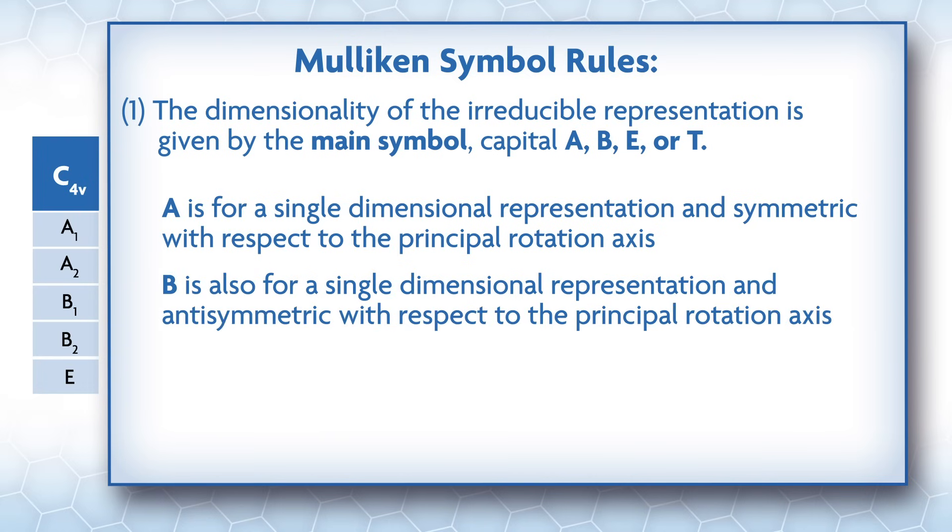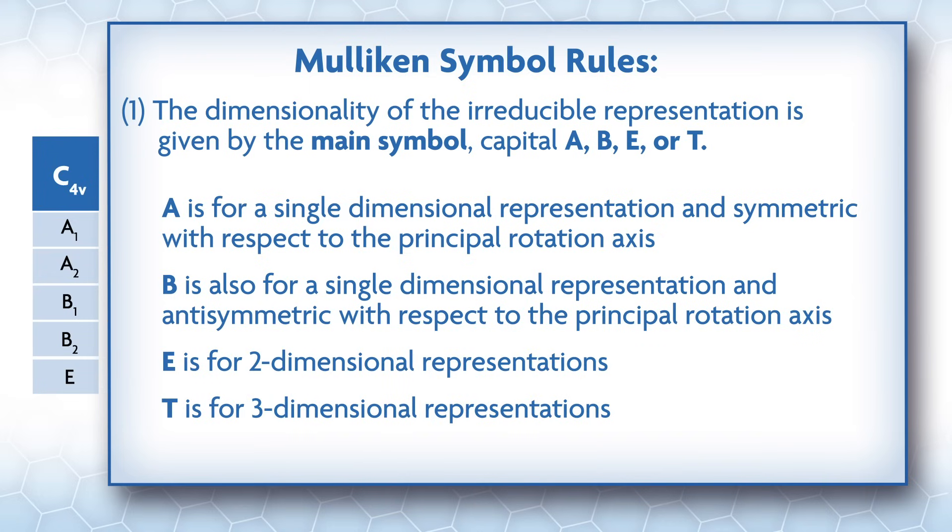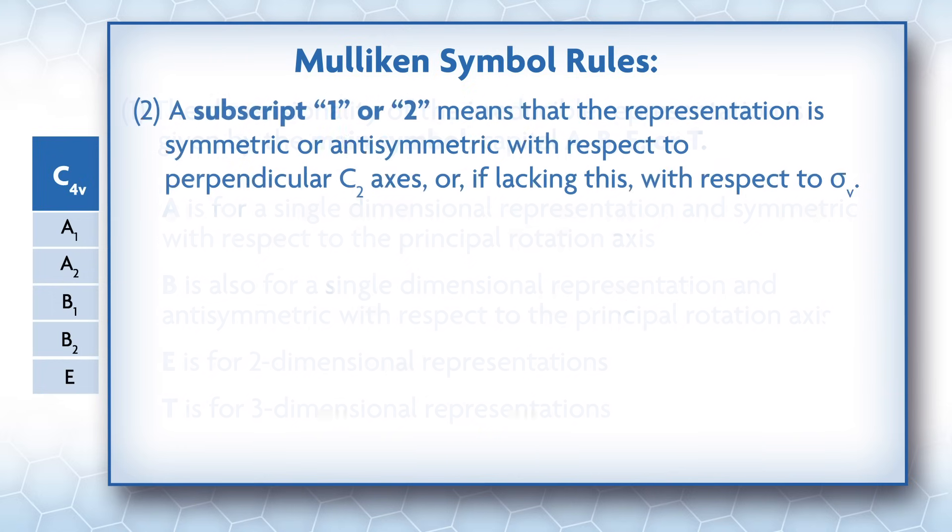E is for two-dimensional representations and T is for three-dimensional representations. A subscript 1 or 2 means that the representation is symmetric or anti-symmetric with respect to perpendicular C2 axes, or if lacking this, with respect to sigma v.